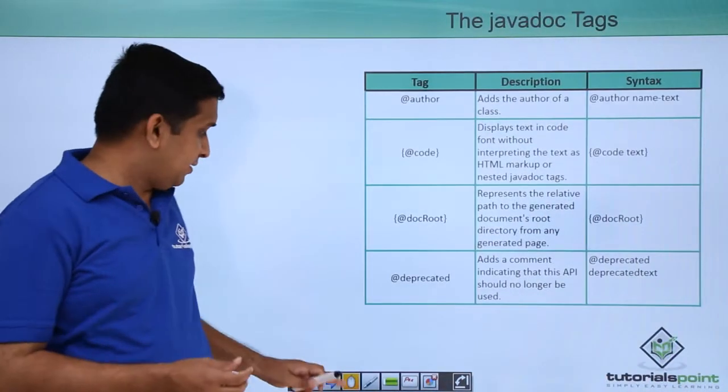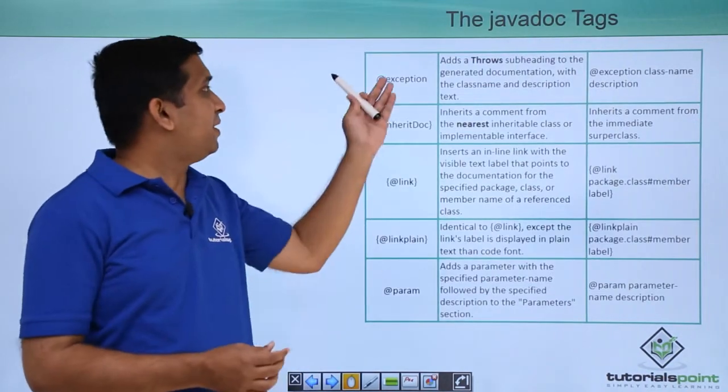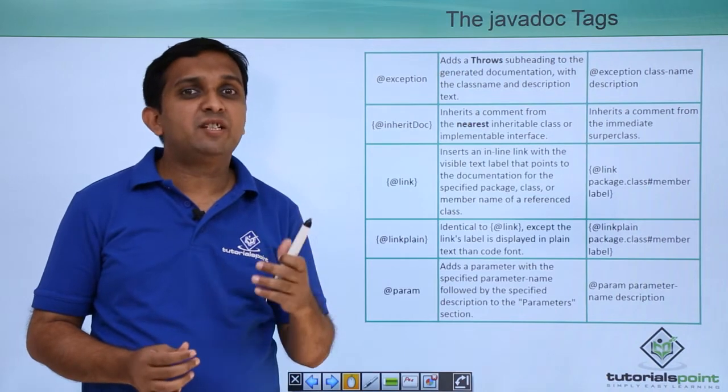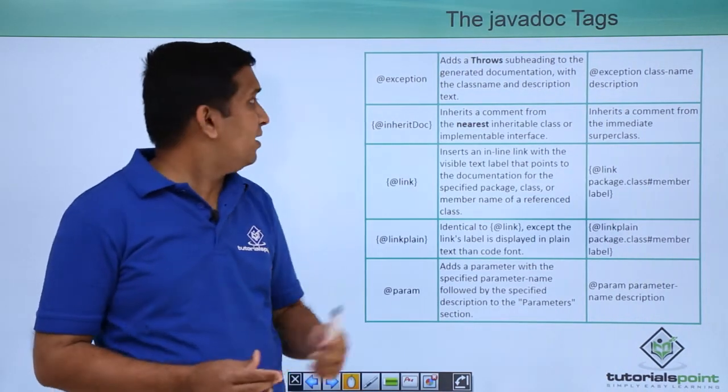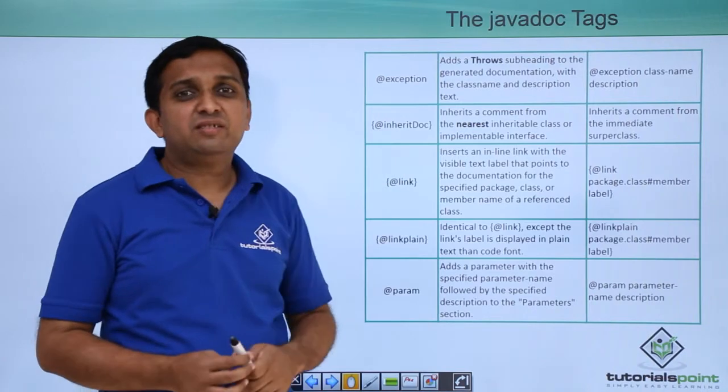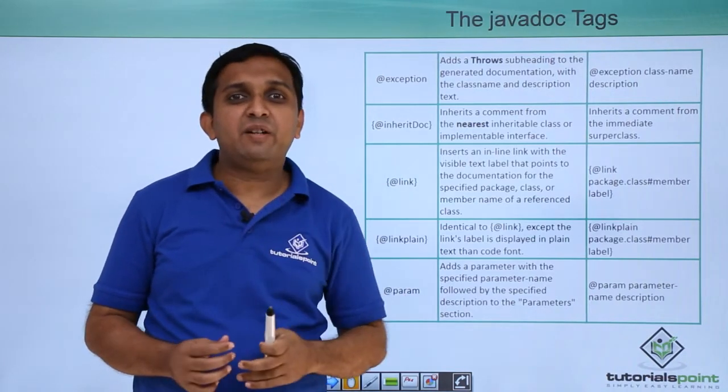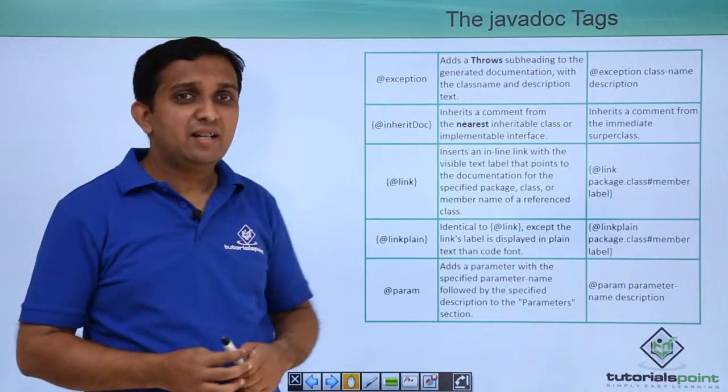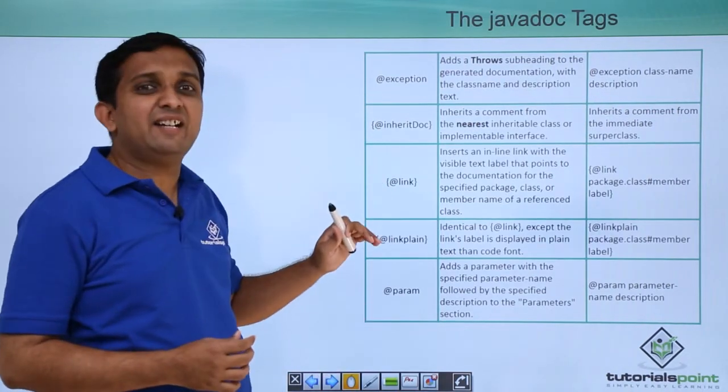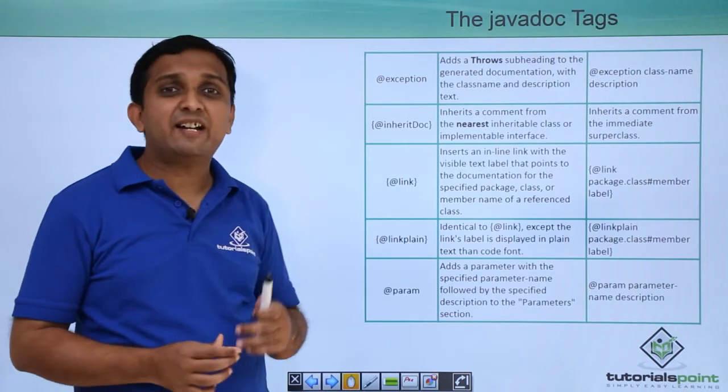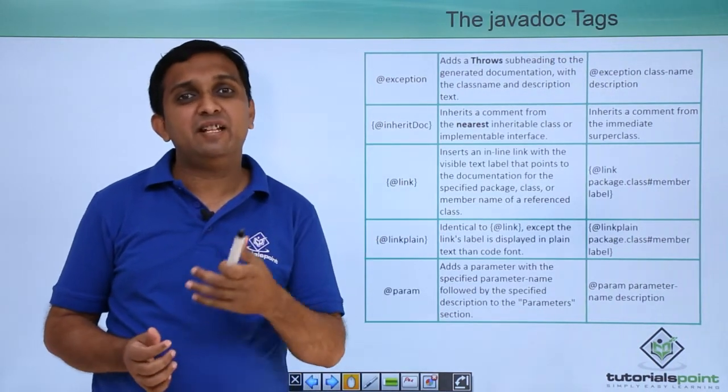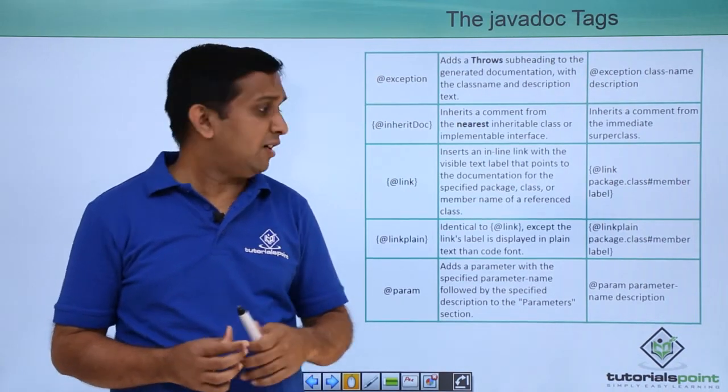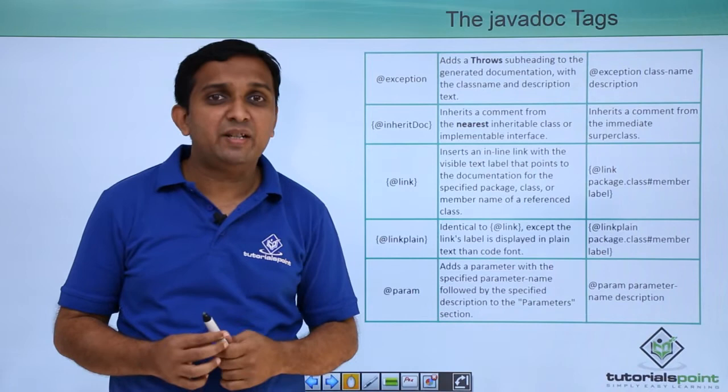Few more tags are there. @exception, so if my class is throwing some exception then the information about that exception is added to the documentation. @inheritdoc, if I have super class and sub class then if I want to inherit the comments of super class then I will make use of this tag inheritdoc. Then @link is there, @linkplane is there, @param is there. If my method is taking some parameters then the types of the parameters will be added to the param tag in the documentation.